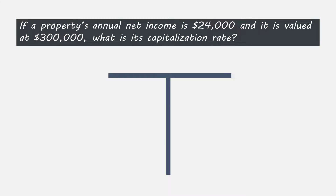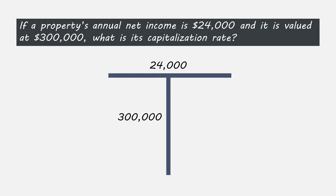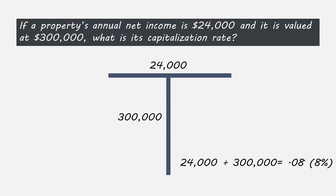And our third and final question: if a property's annual net income is $24,000 and it's valued at $300,000, what is the capitalization rate? This question comes from the income approach to valuing real estate. Here we have the part — the $24,000 income — and we have the whole, the $300,000 value. We need to determine the capitalization rate, so again we divide. $24,000 income divided by the value of $300,000 gives you a capitalization rate of 8%.